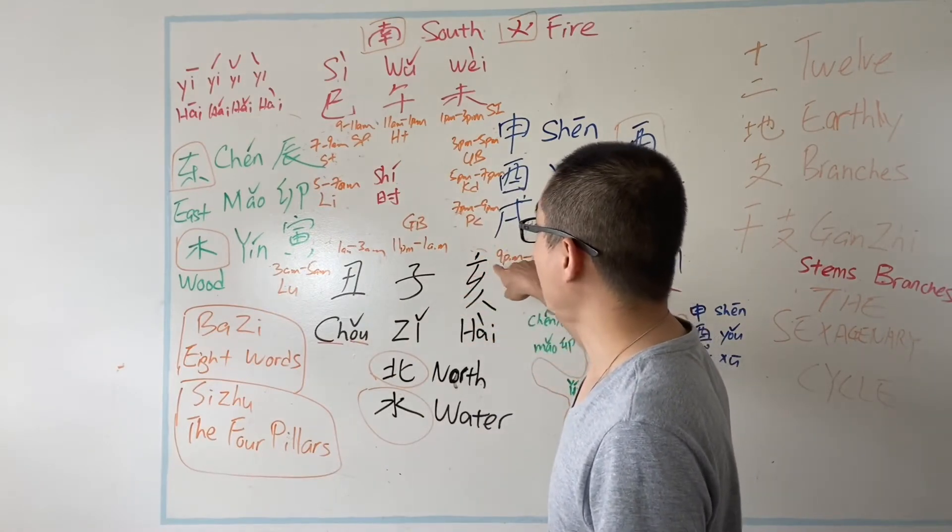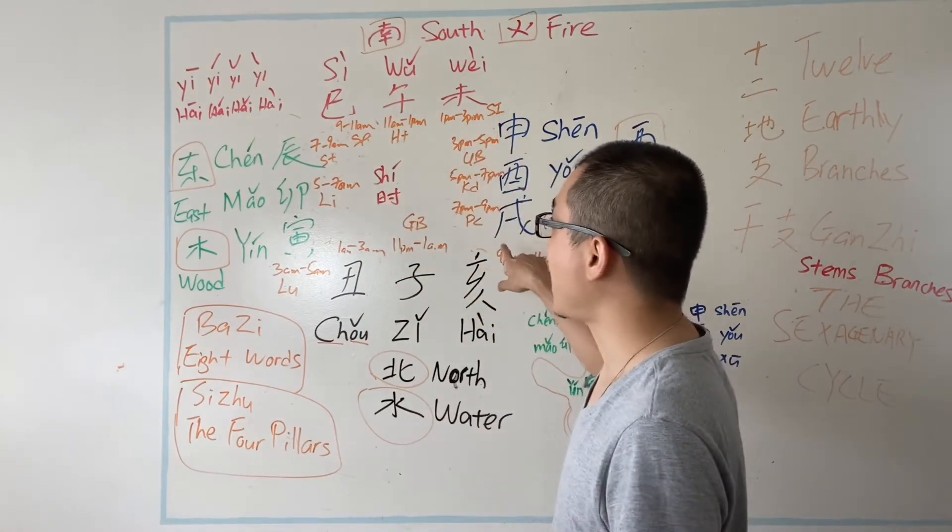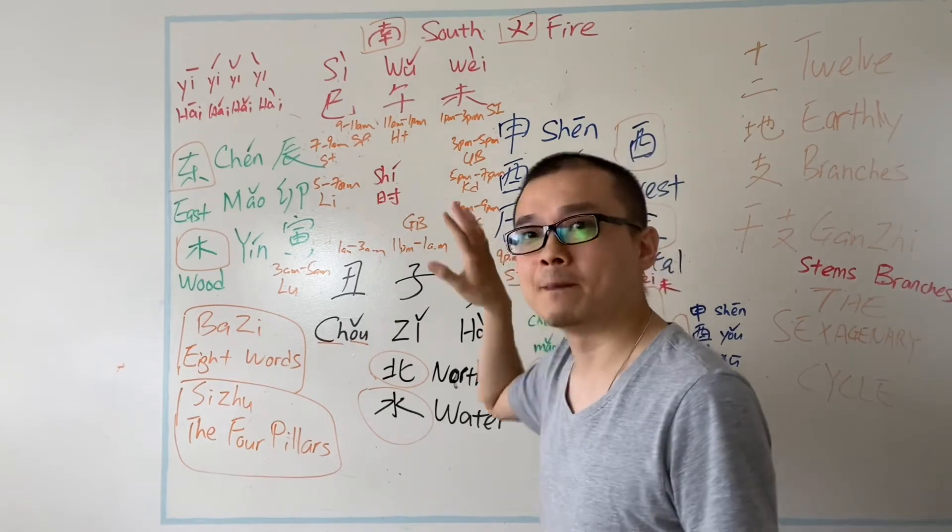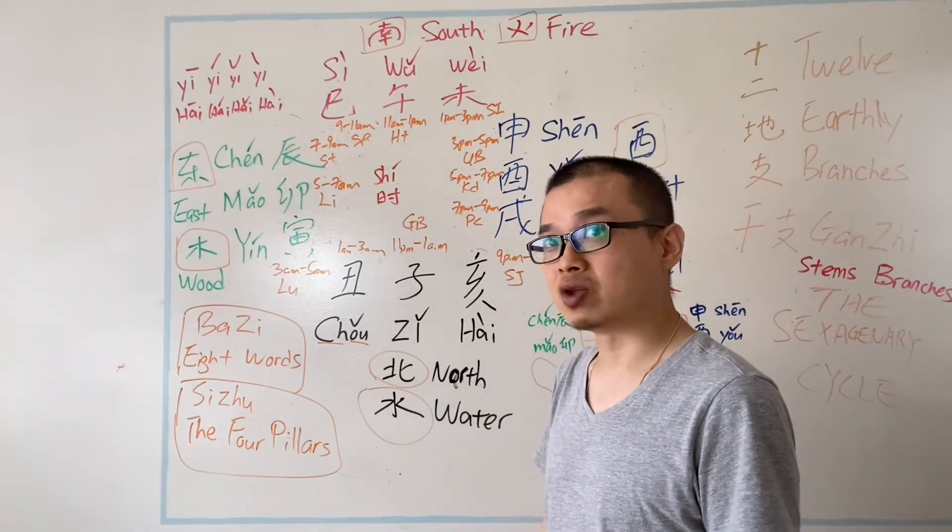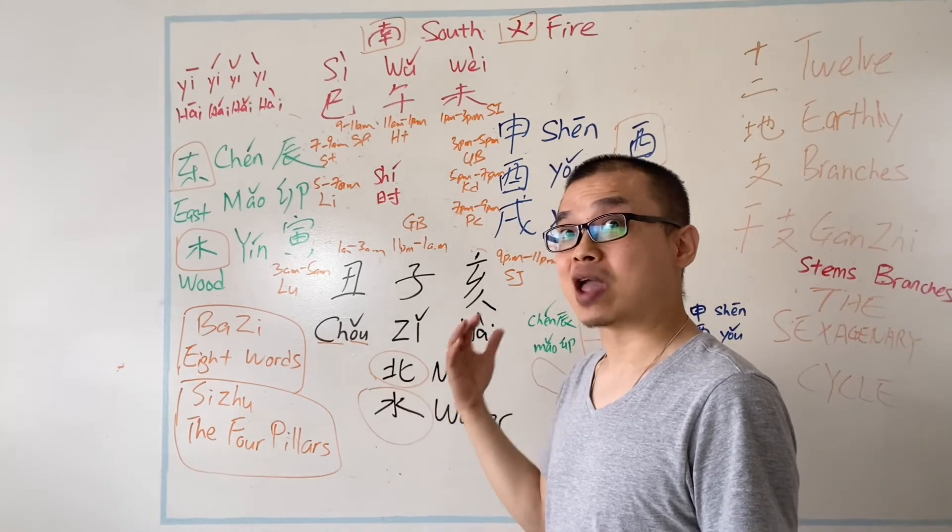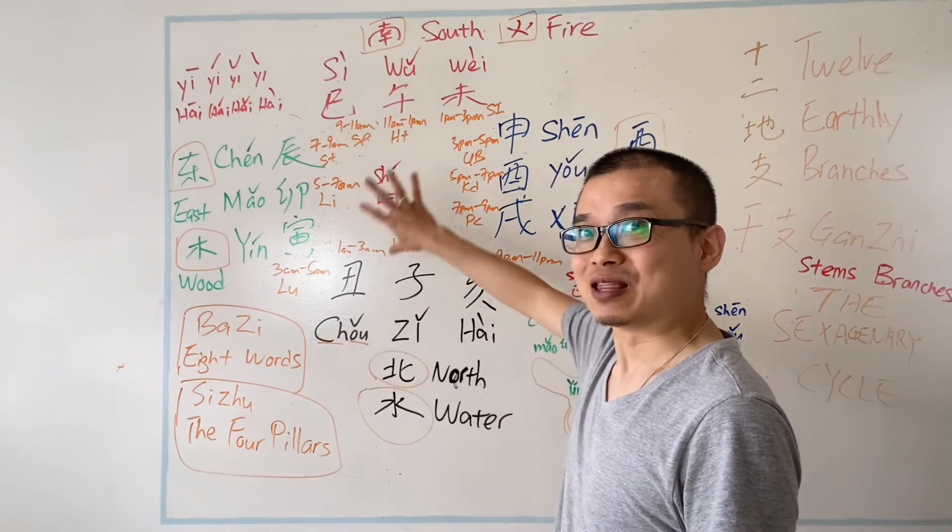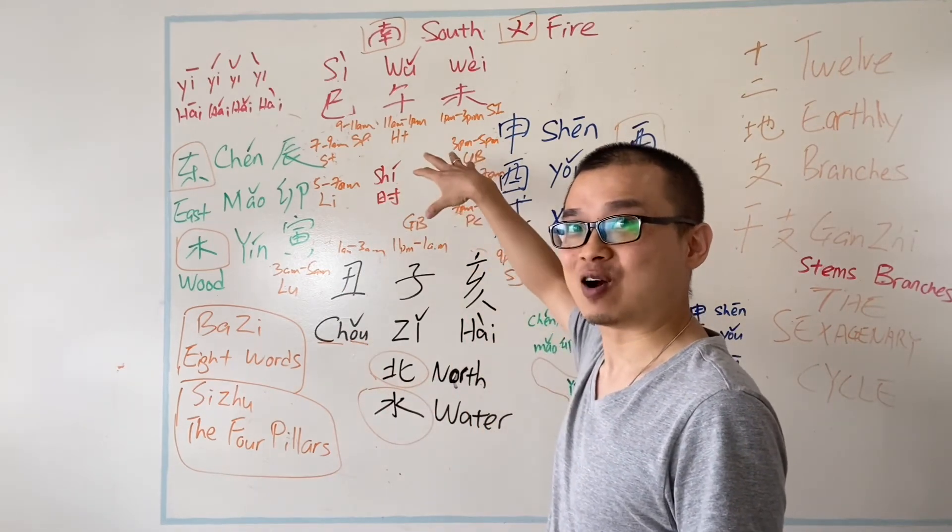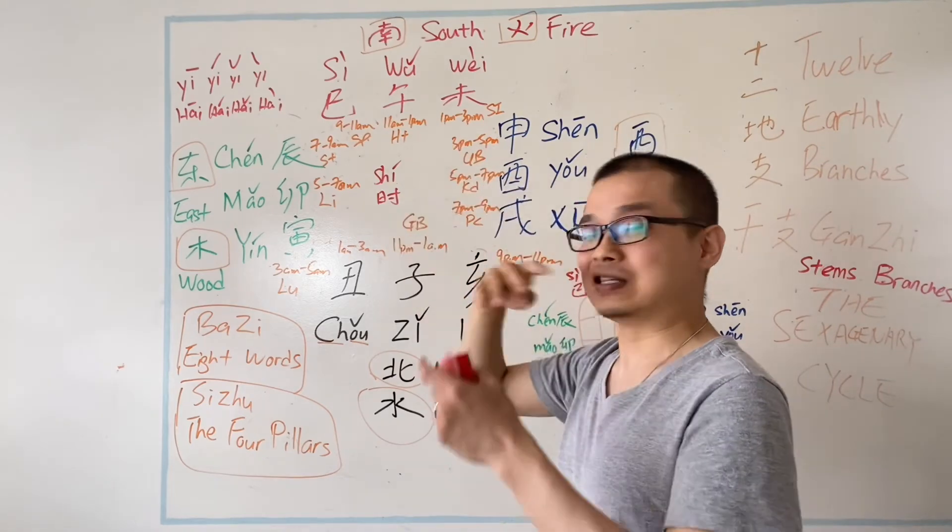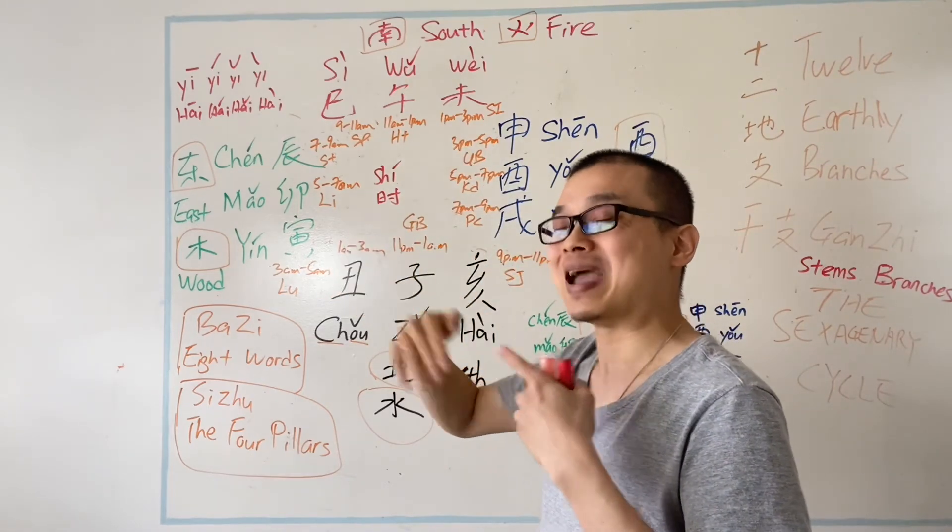So in the next video, I'm going to show you how the 12 shi cheng match the 12 meridians. Then in our acupuncture, we actually use the meridian and the Chinese clock, and we can see how they can treat and balance each meridian.